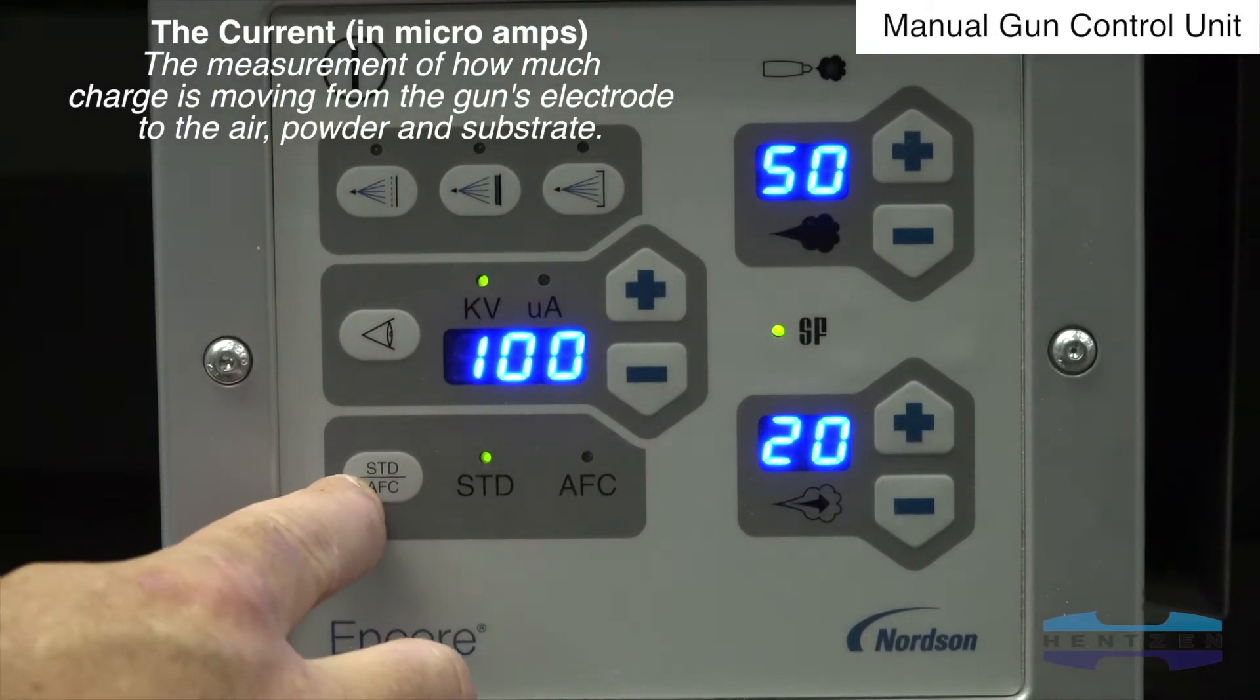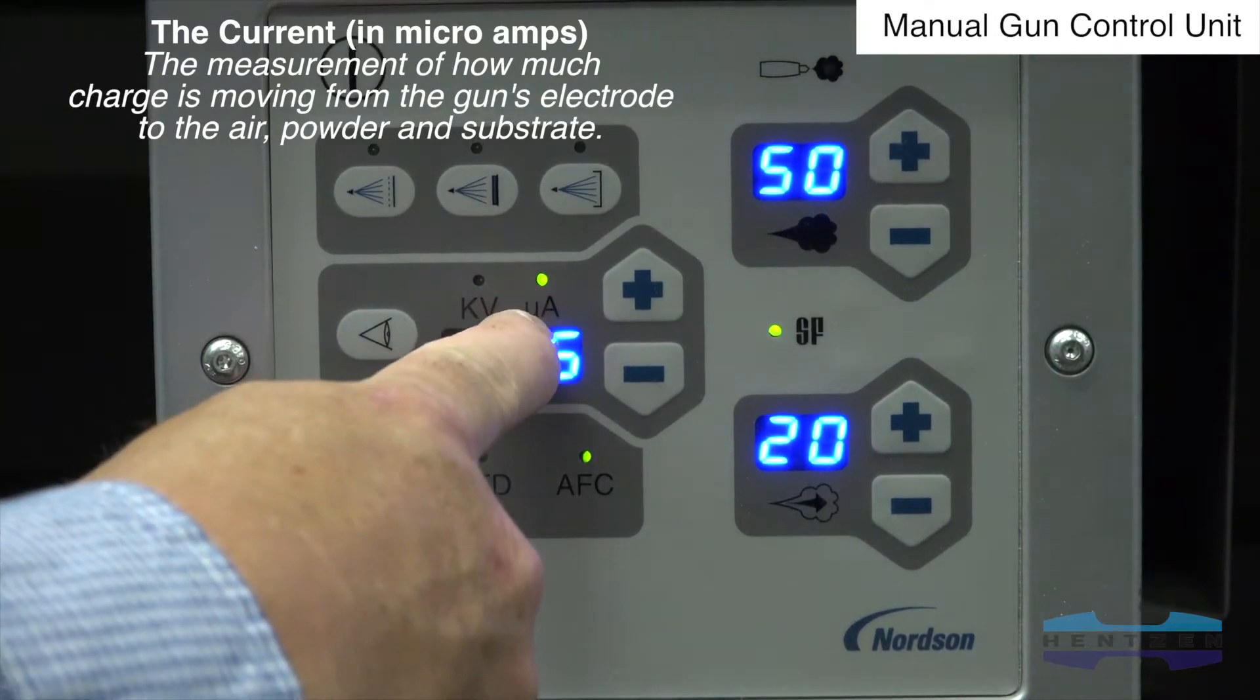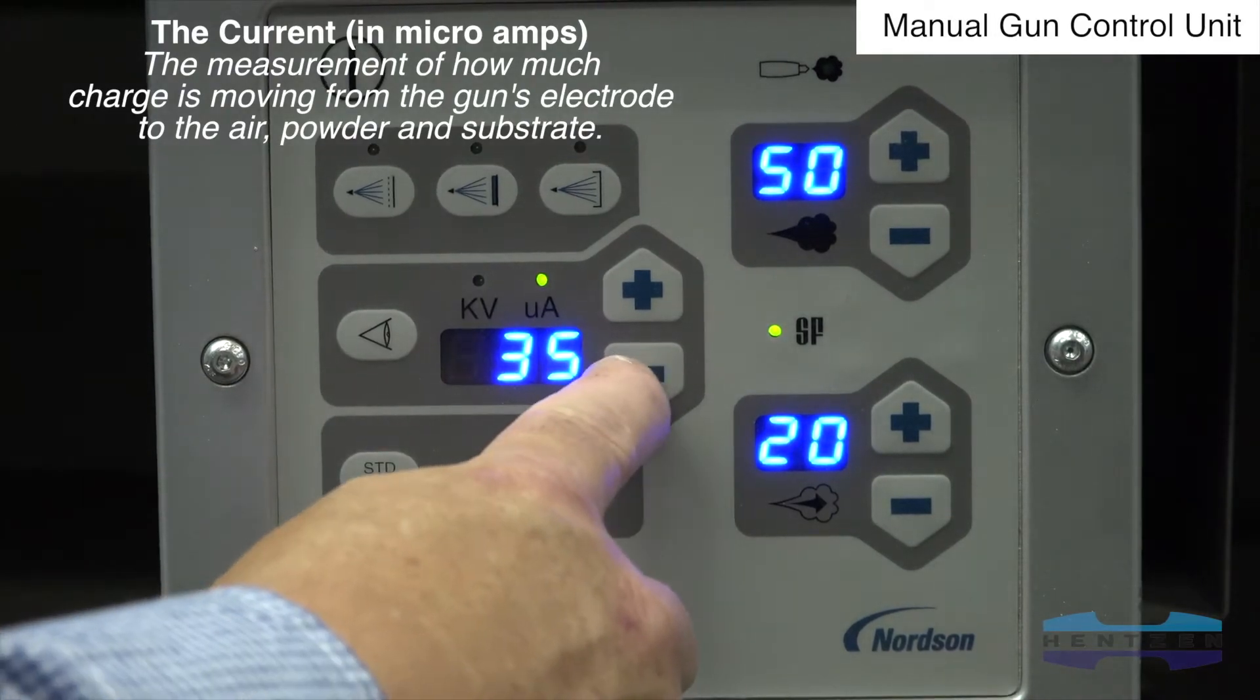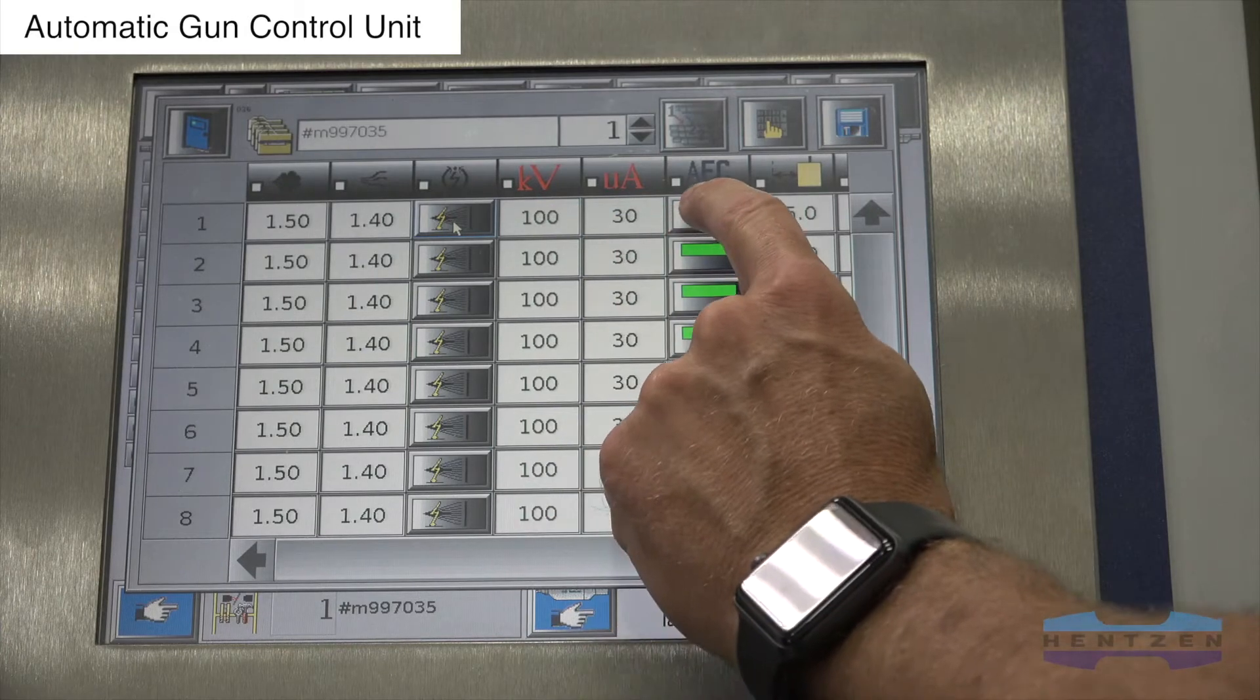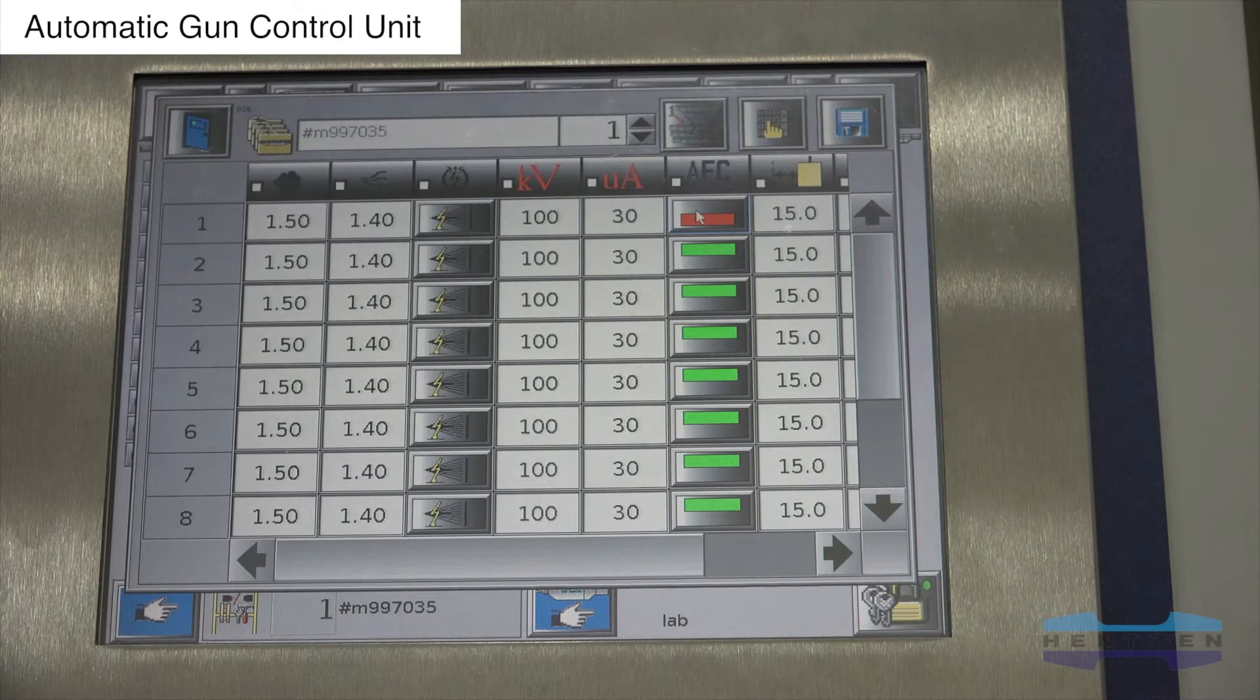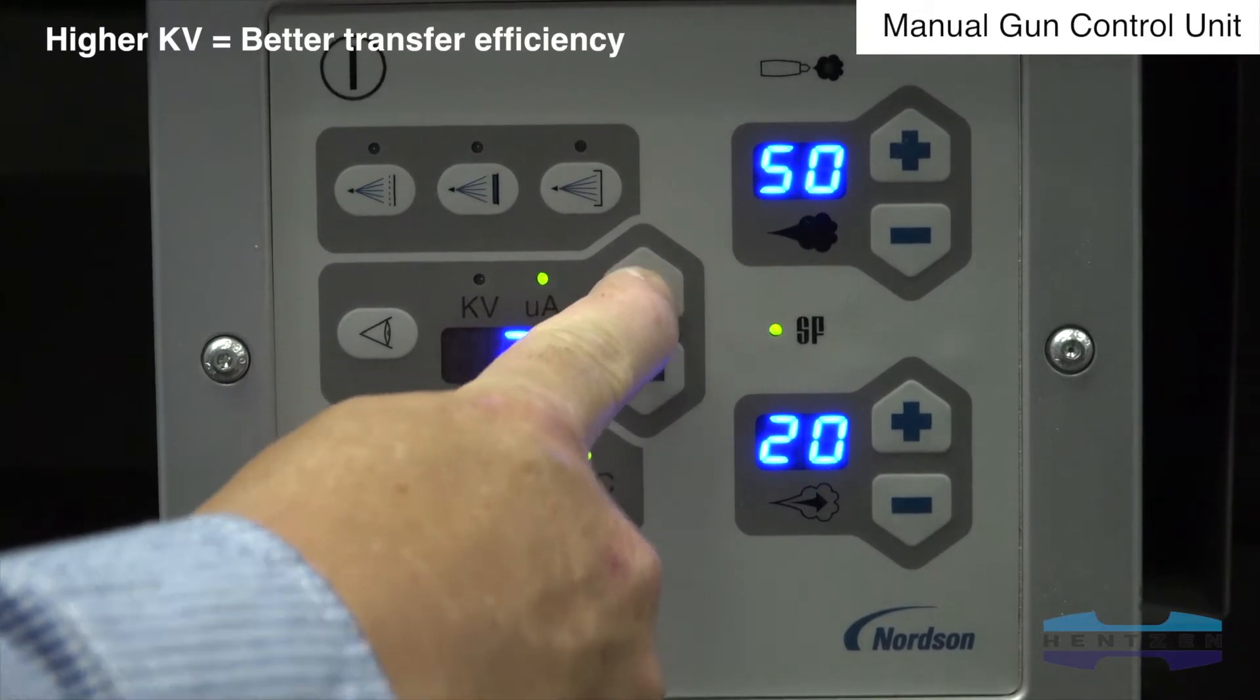The current, in microamps, is the unit of measure indicating how much charge is moving from the gun's electrode to the air and powder exiting the gun and also the substrate. The gun should be set at the maximum KV value available as long as it does not produce an undesirable finish. A high KV setting generates the highest potential to charge powder, thus yielding better transfer efficiency.